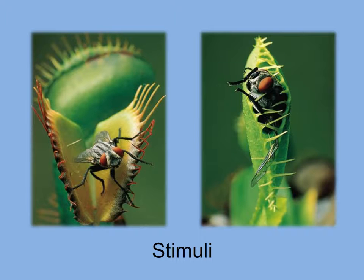This Venus flytrap has trigger hairs. When the hairs are touched, the leaves fold together and trap the insect. Secretions containing digestive enzymes kill and digest the prey.